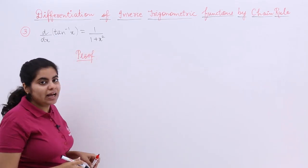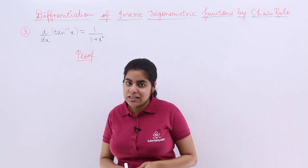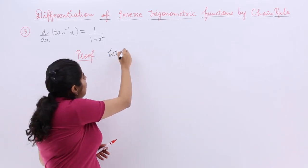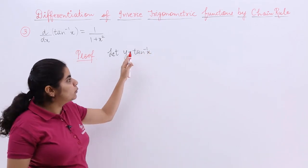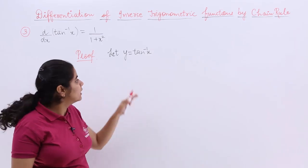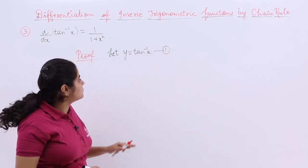Now it is d by dx of tan inverse x. What function are we going to deal with? The tan inverse x function. Like previous videos, let's name this tan inverse x as y, substituting it as y. It is better to deal with y because ultimately we have the habit of dy by dx. So y is tan inverse x, equation 1.